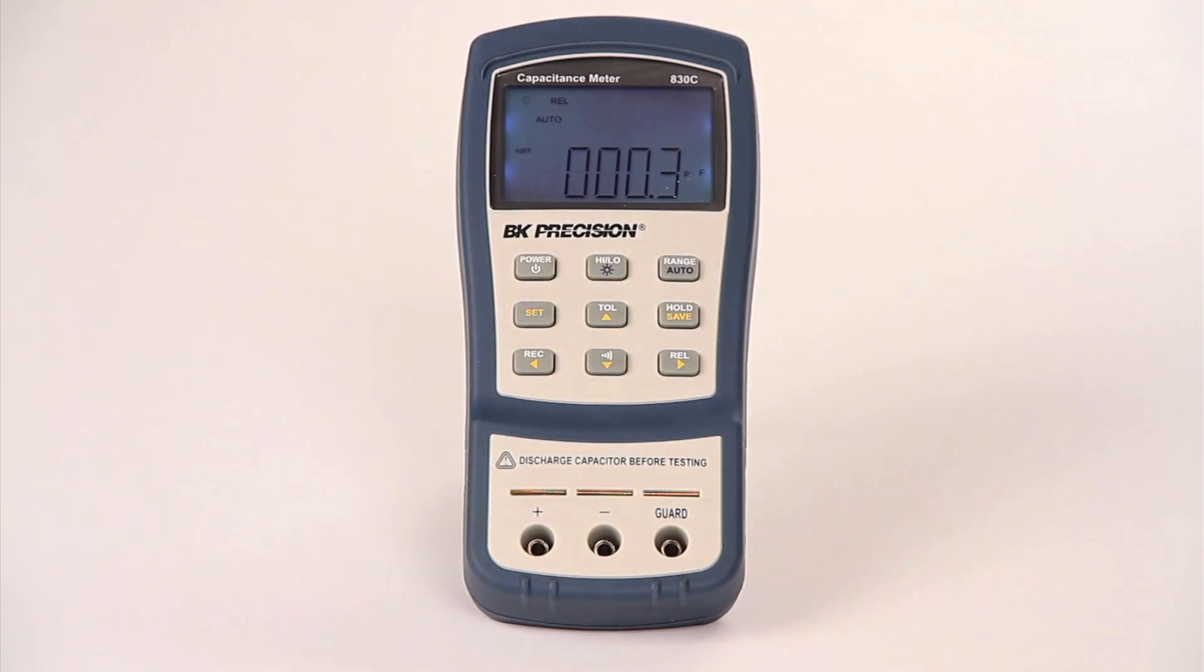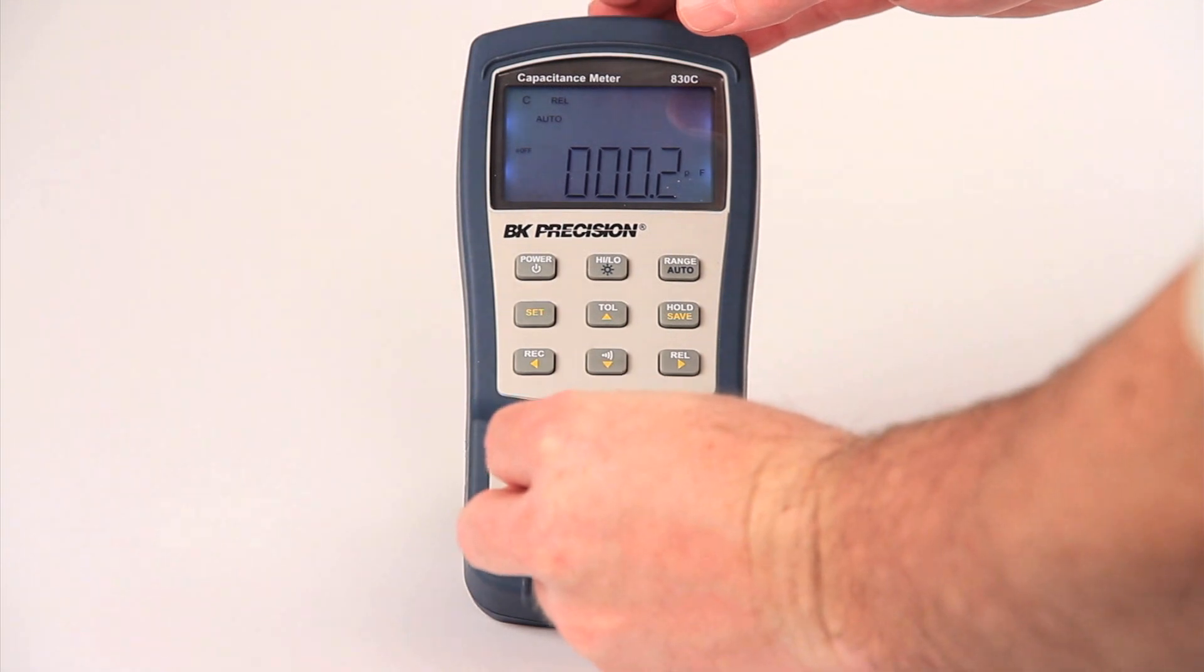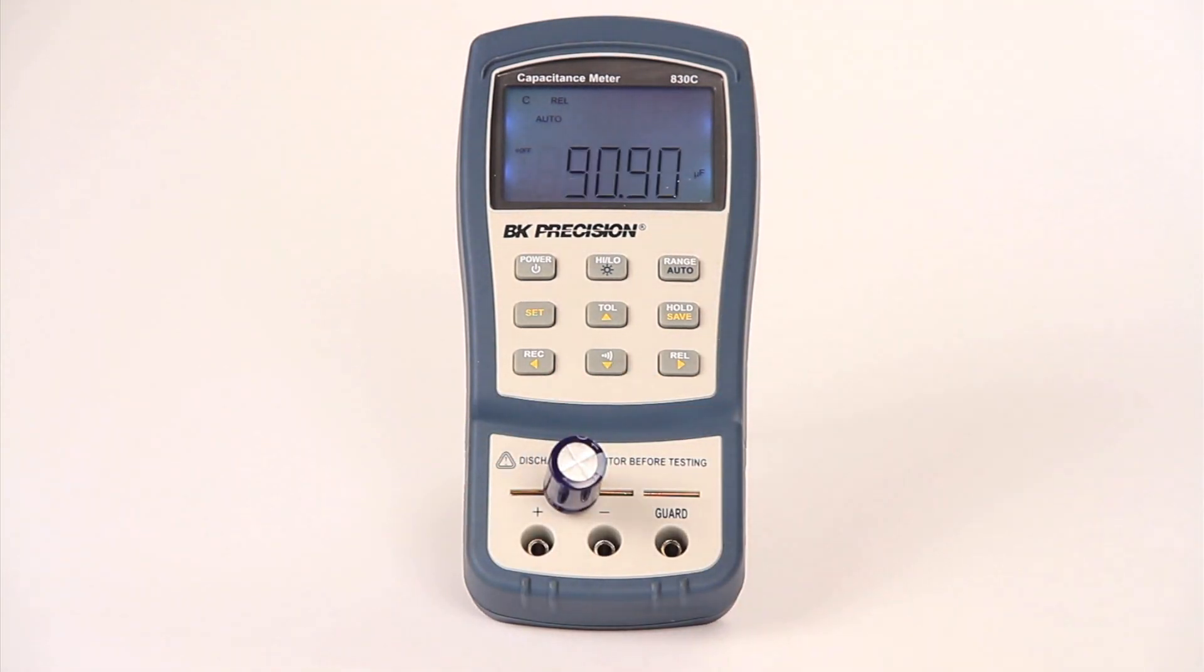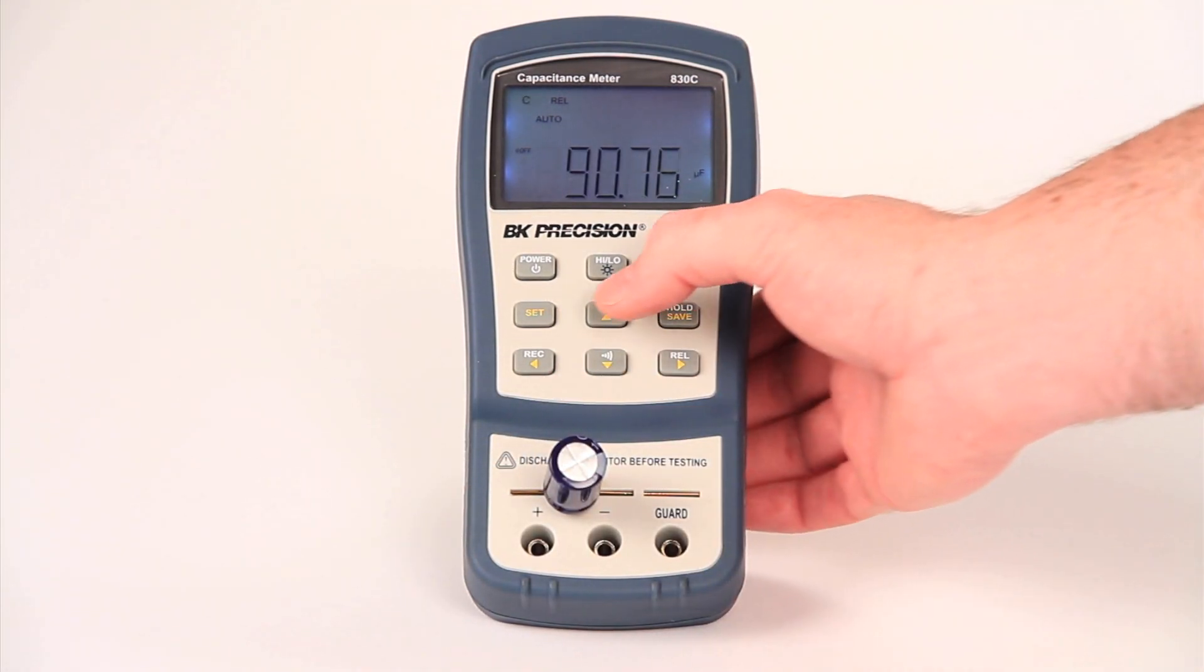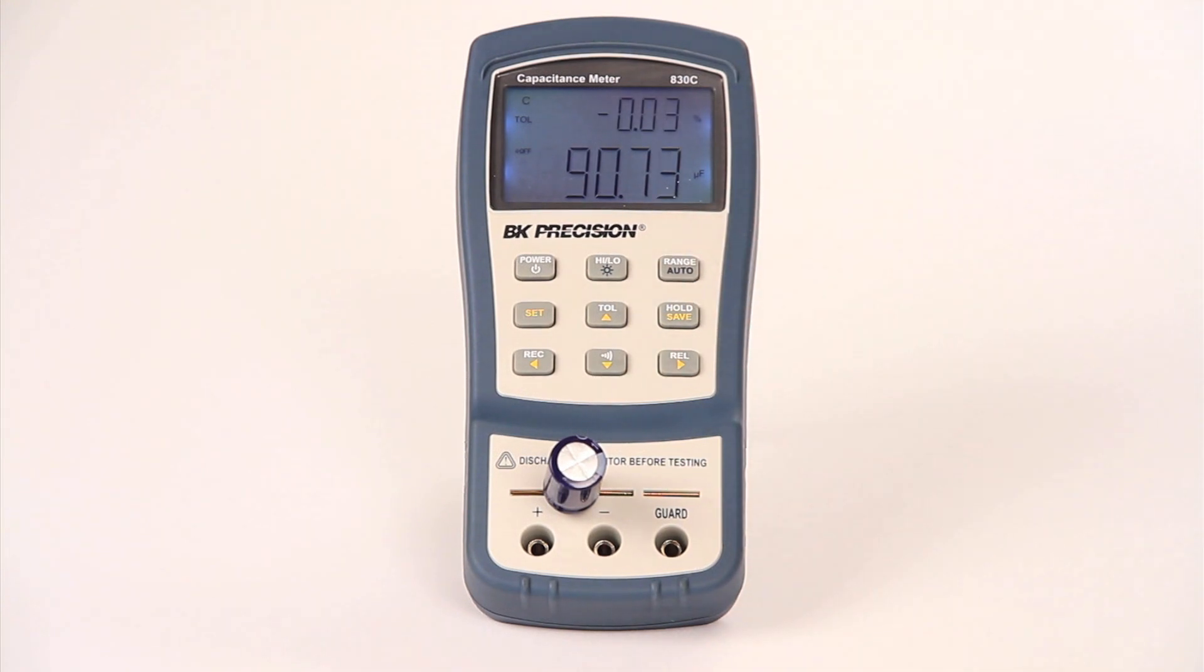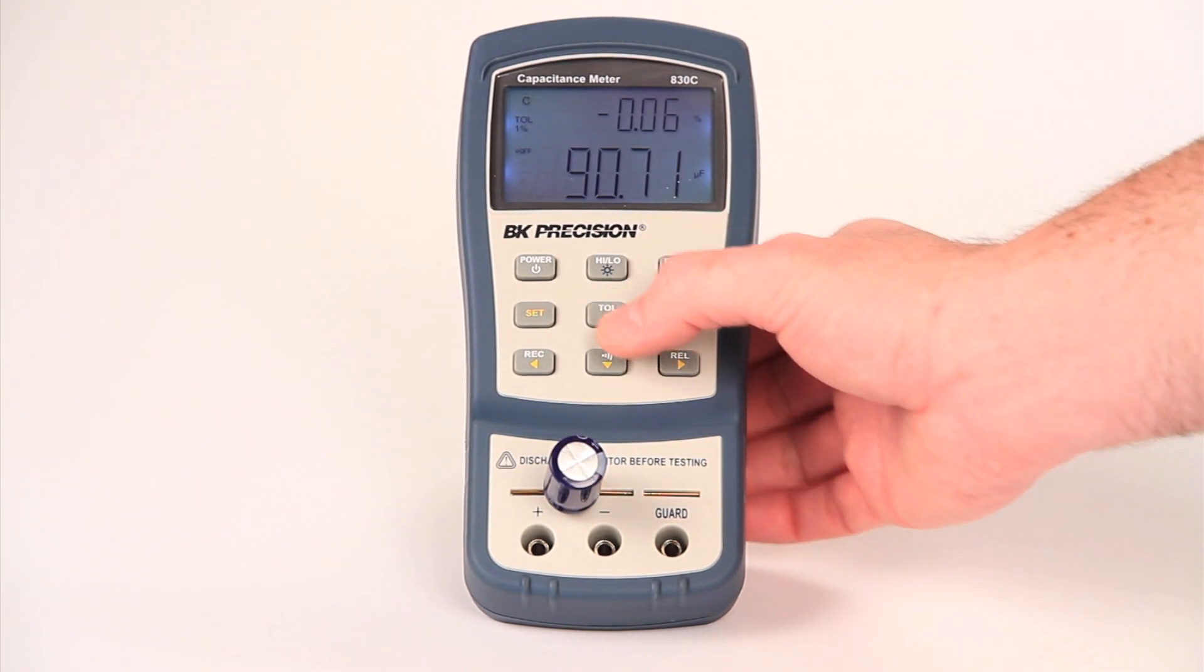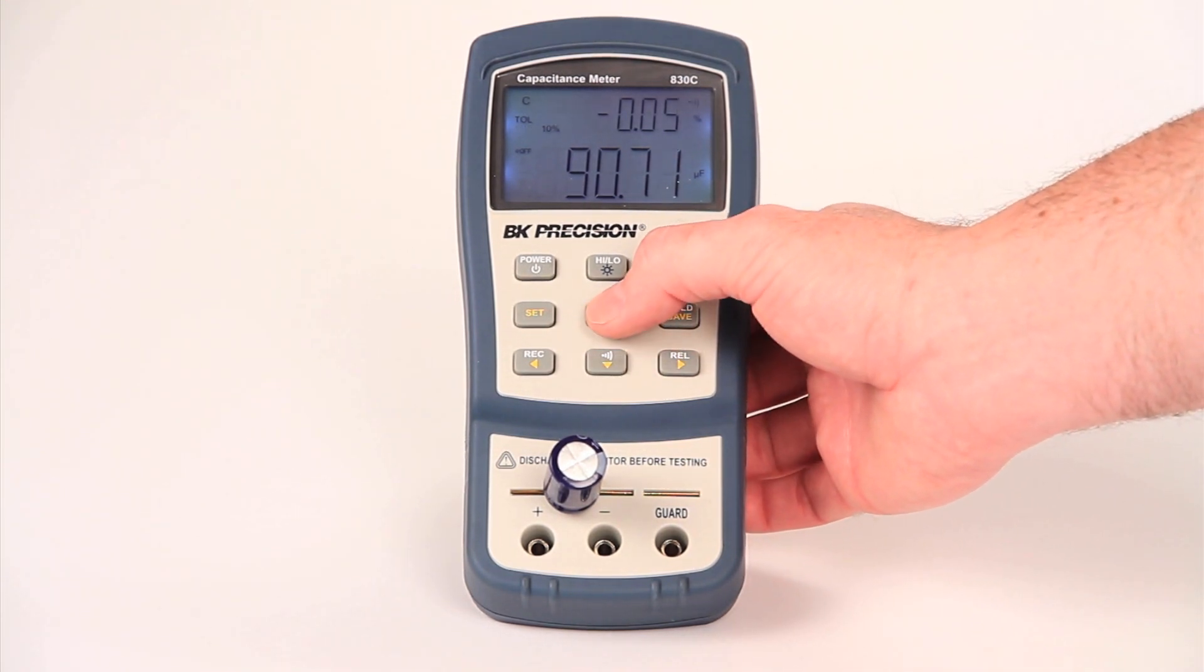These new models' tolerance feature makes grading or sorting capacitors easy. Simply insert your known good standard capacitor, press the tolerance button marked TALL to select the mode, continue pressing the TALL button to cycle through 1-20% tolerance level settings.